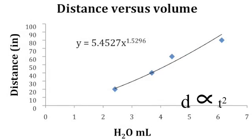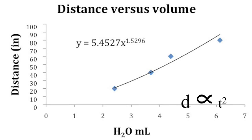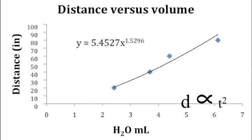So after we put data into an Excel file, we've graphed it as a power function with Y as distance and X as volume, which represents time in this case. Although we were expecting to see a relationship of Y equals X squared, as it represents distance proportional to time squared, we actually got a value of Y equals X to the 1.5.